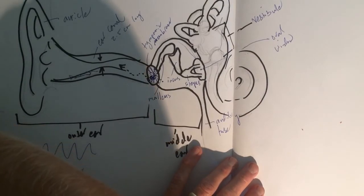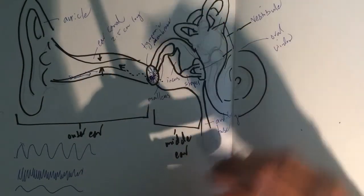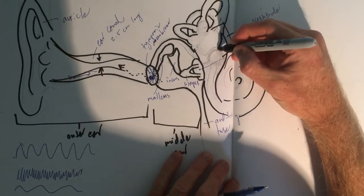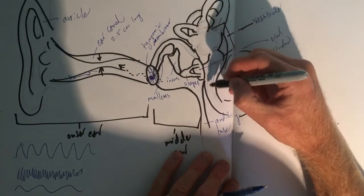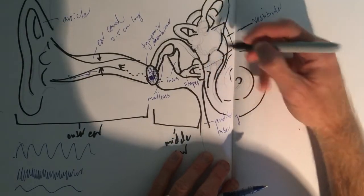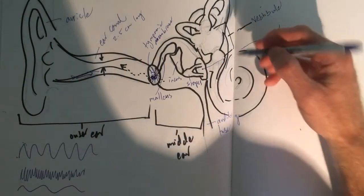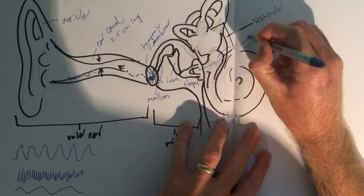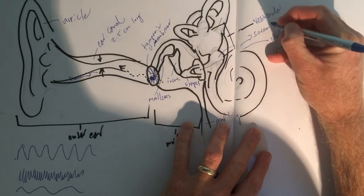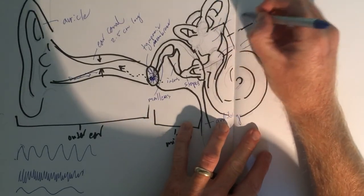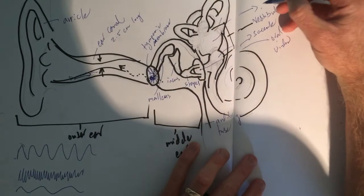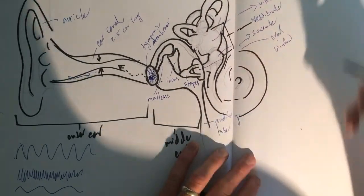And the vestibule consists of two different smaller compartments. That's the first smaller compartment, which connects right on to the oval window. This first compartment, this is called the saccule. And this larger compartment is called the utricle.